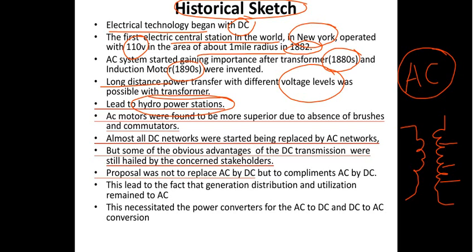Once power generation started, the focus shifted to its utilization, and the most promising means was through motors. AC motors were found to be superior over DC motors, primarily because of the absence of brushes and commutators. Most losses in DC machines occurred at brushes and commutators. Though speed control was simpler in DC machines, AC machines — lacking brushes and commutators — were more widely adopted.